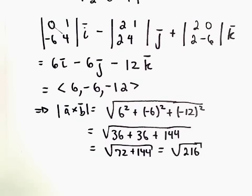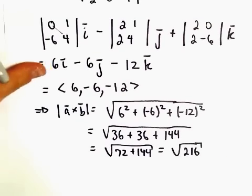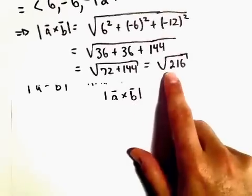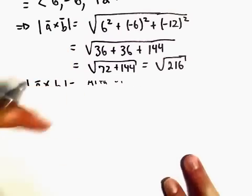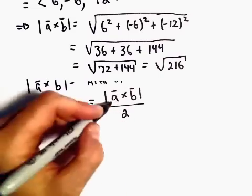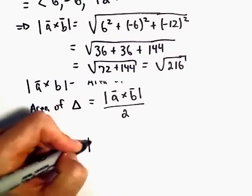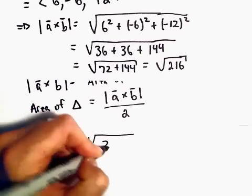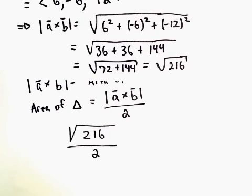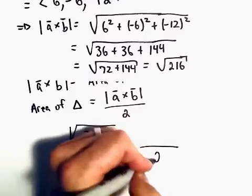Well, to find the area of the triangle, all we have to do is just take this value. This is now the area of the parallelogram. So the area of the triangle, like we said, we just take the magnitude of the cross product, which is the square root of 216, and then we can divide that simply by 2. So the question is, does this simplify at all?